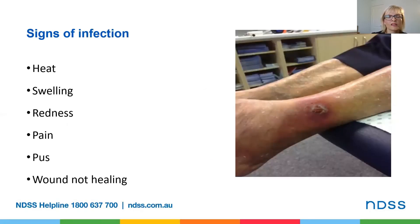Looking back at our picture of the ulcer, let's look at signs of infection. You can see that the wound is not healing — remember it was just a scratch three days earlier. The wound is also really red and if you were to touch the skin, it would likely feel hot to touch. Other key signs of infection include pain, swelling and pus.